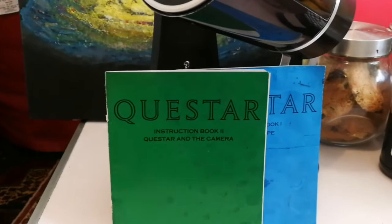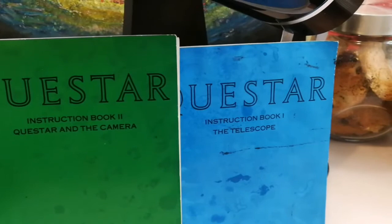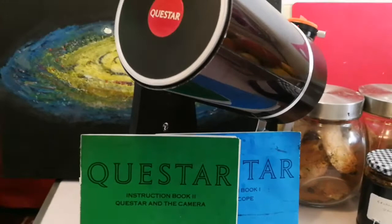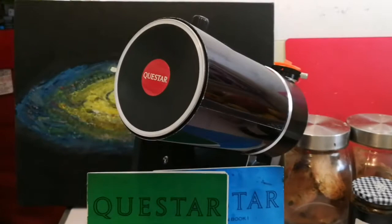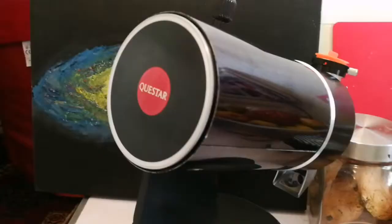Okay, that's the way my Questa looks and these are the booklets, instruction book 1 and book 2 as you can see. Let me show the Dobsonian mount that I was talking about.